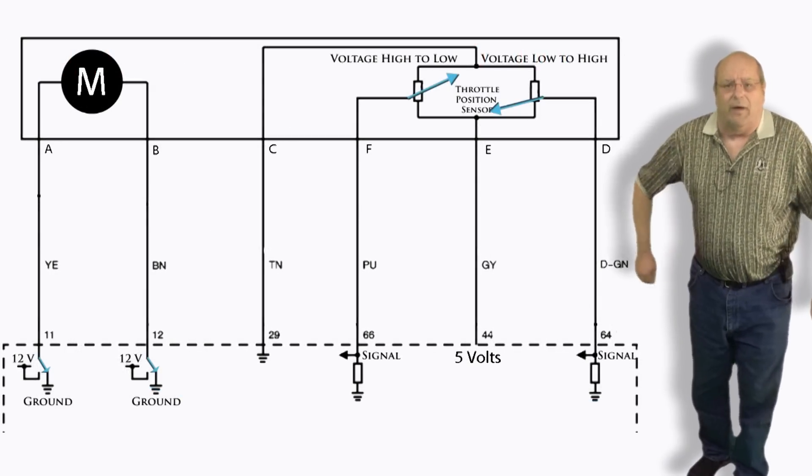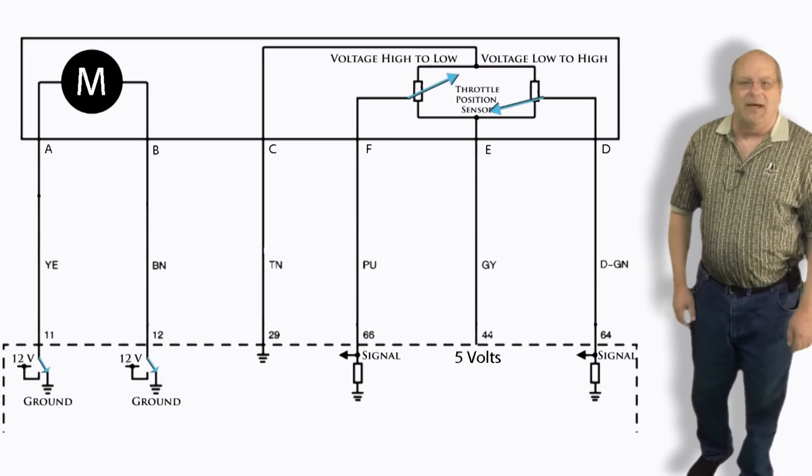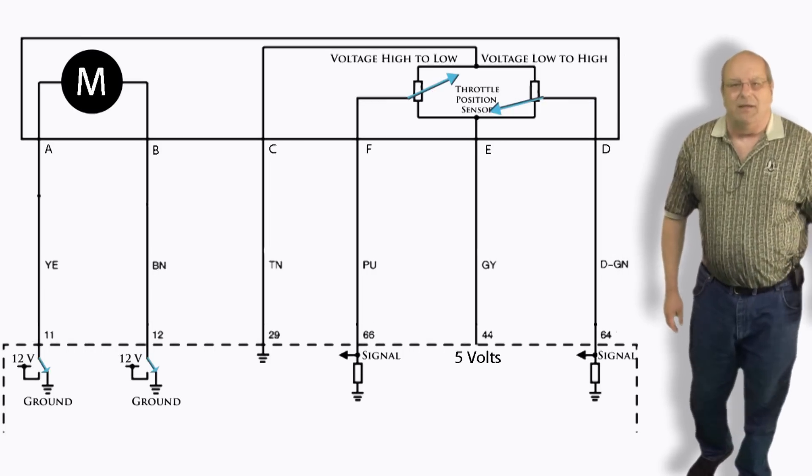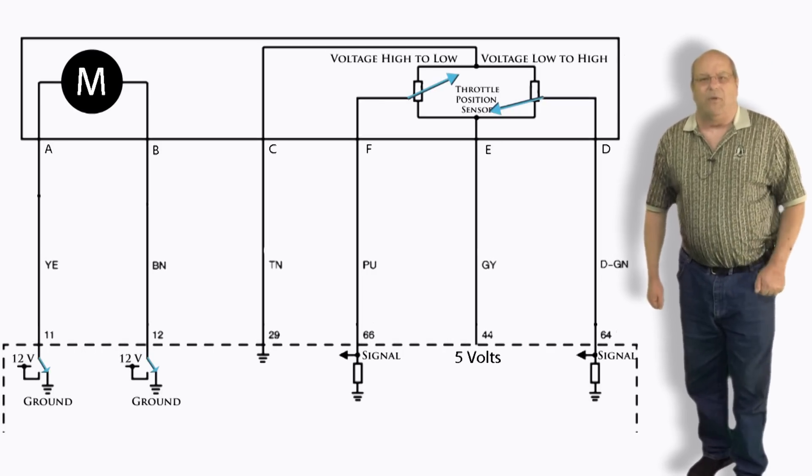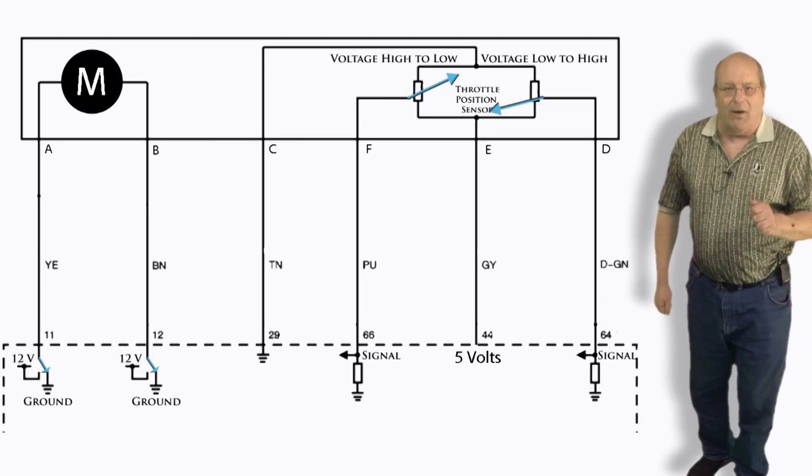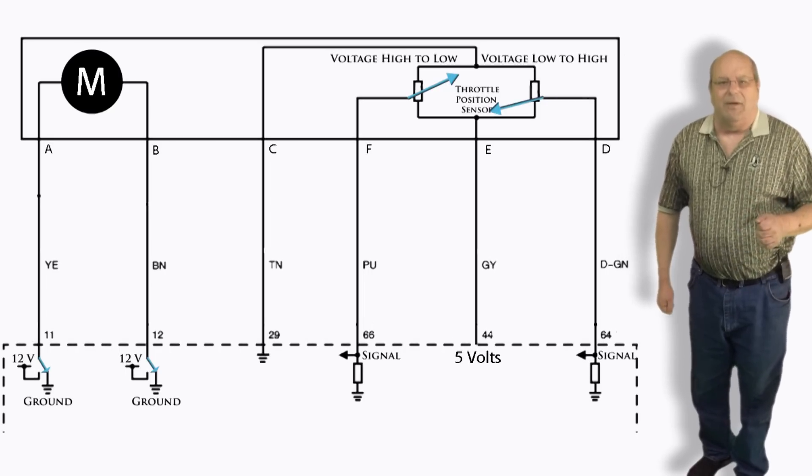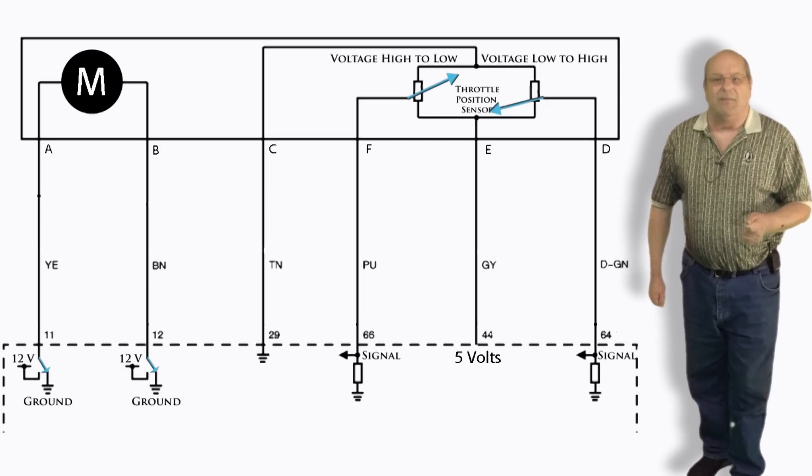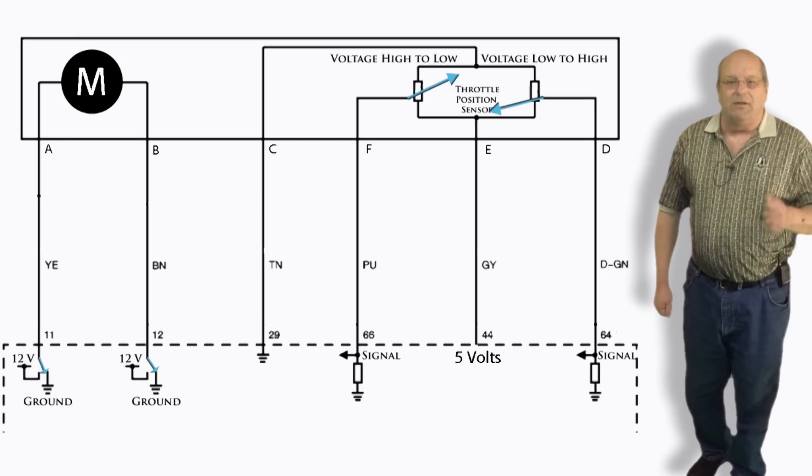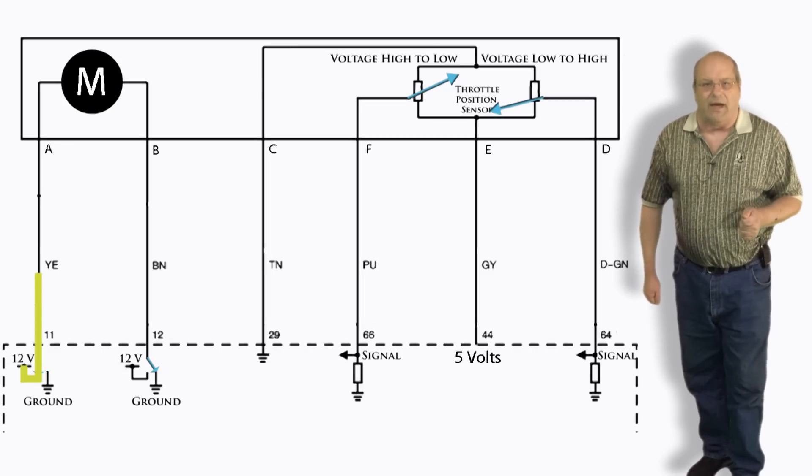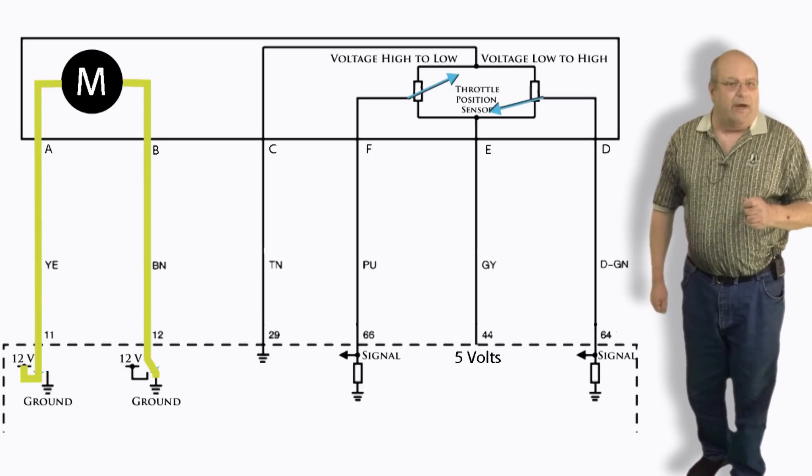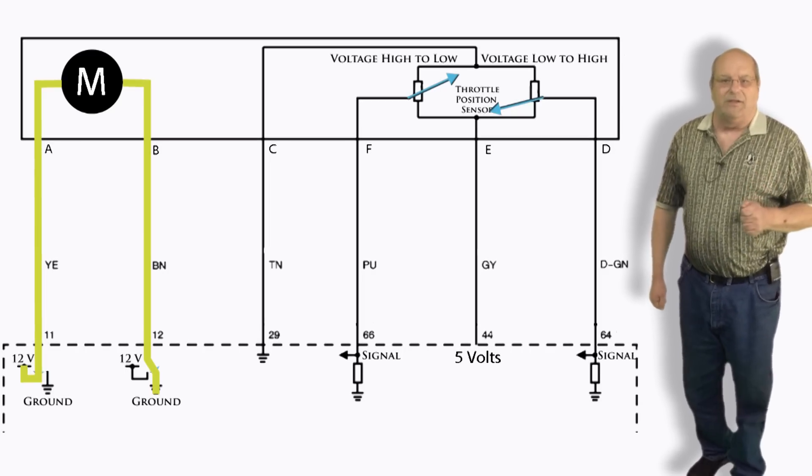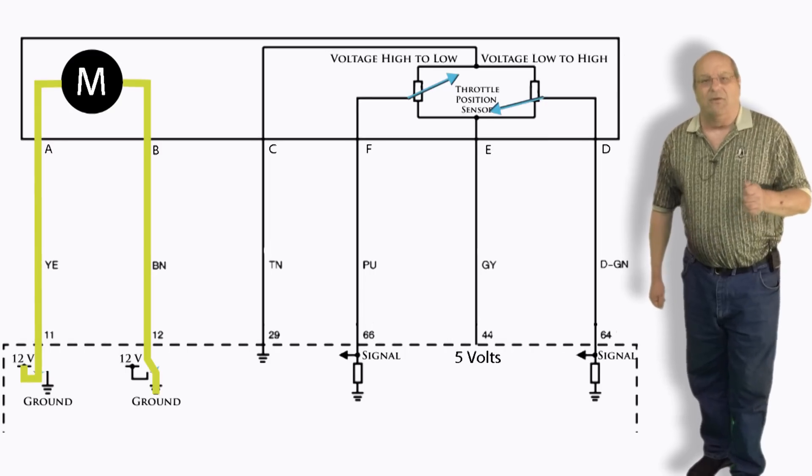Now behind me is a wiring diagram for the throttle body. When the PCM receives a signal from the APPS, it then commands the throttle body motor to move the throttle plate in the same amount. Notice the black dot with the M in the middle. This is a sign that represents the motor. The motor is controlled by the PCM sending a 12 volt signal into the motor and then grounding the other side. This turns the motor in one direction. To reverse the motor direction, the PCM reverses the position of the transistors and in turn also the current flow.